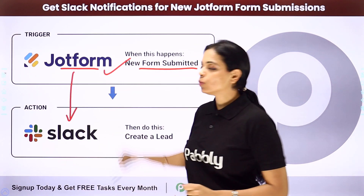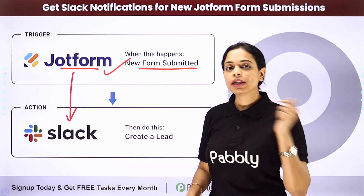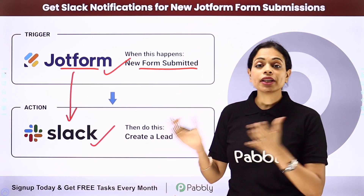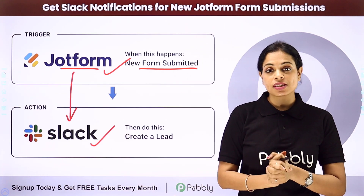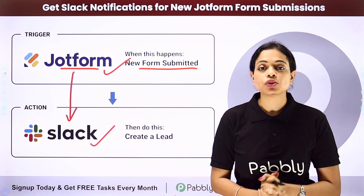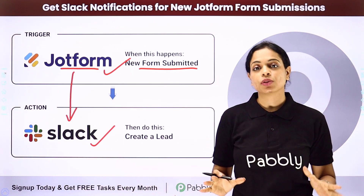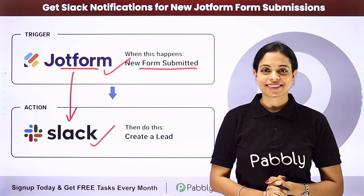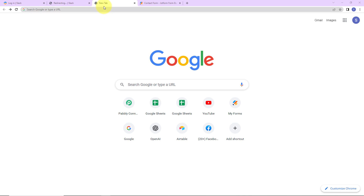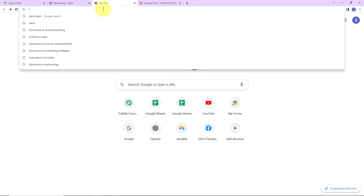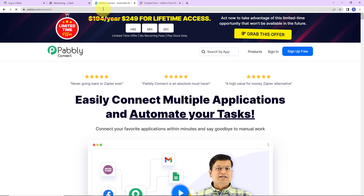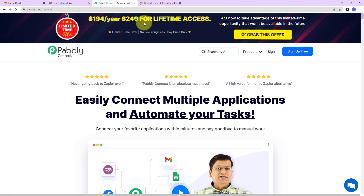Here your trigger application will be JotForm and your action application will be Slack. To understand how you can integrate and automate this entire process yourself, let me take you to my screen. To begin, we are going to type the URL pabbly.com/connect, and as we do that, here we have reached the landing page of this software.